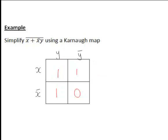So now let's look at an example that follows on from this one, simplifying X plus X bar Y, the negation of that, so that with a bar over the top, using a Karnaugh map.